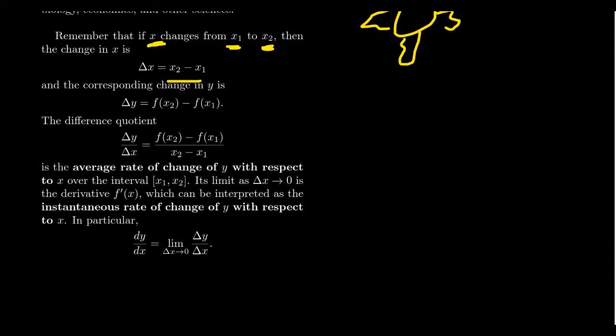We can do the same thing for Y, where the change of Y, delta Y here, remember that triangle represents the Greek letter delta. Delta difference is what it's measuring there. Delta Y would be the change of the Y coordinates.